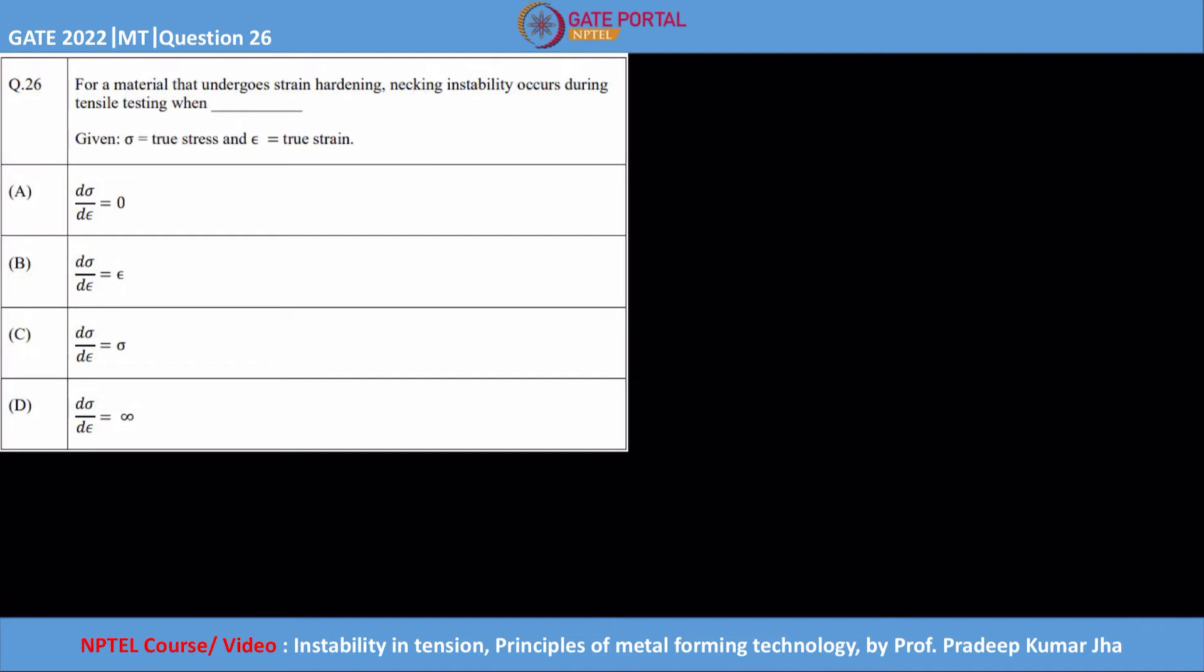Hello guys, this is one more question from GATE 2022, question number 26. It says for a material that undergoes strain hardening, necking instability occurs during tensile testing when—and we have different conditions given. So what is this necking instability criteria?